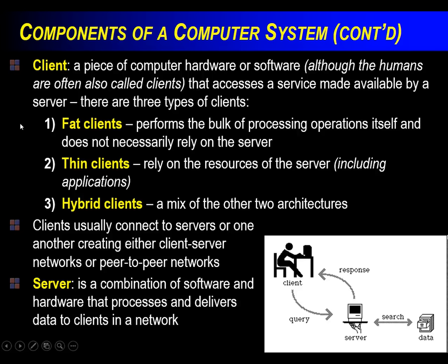A thin client relies heavily on the services of the server. This is not the system you're used to, but if you go to supercomputer systems or the University of Manitoba's Linux labs, their machines don't really have any software on them — when you start software, you're starting it on a big computer, so if that server goes out, all the clients go out. A hybrid client would be a mix. These computers are more of a hybrid system. Clients usually connect to servers, which connect to other servers in different ways, including client-server networks or peer-to-peer networks.